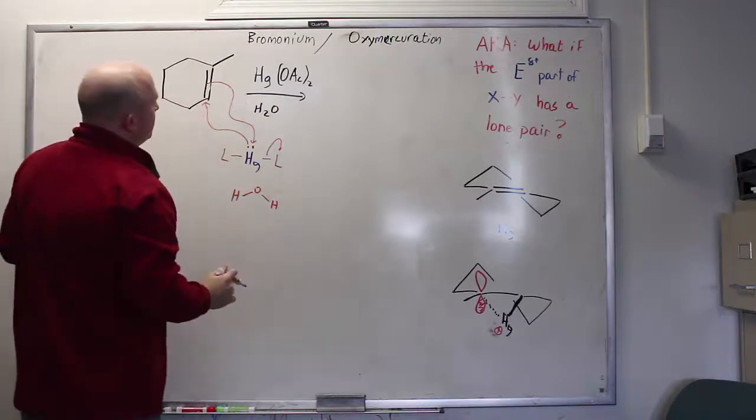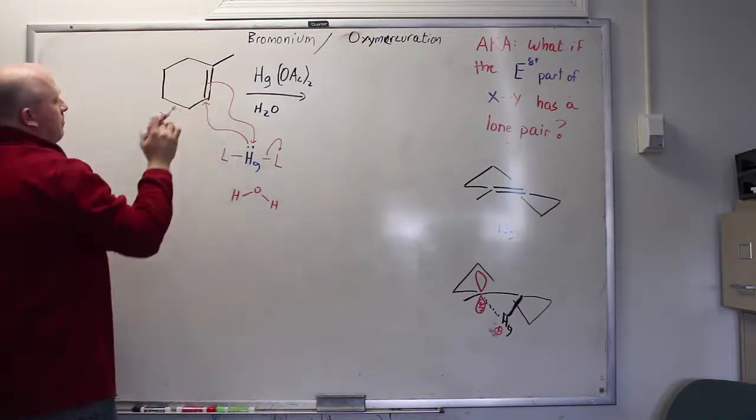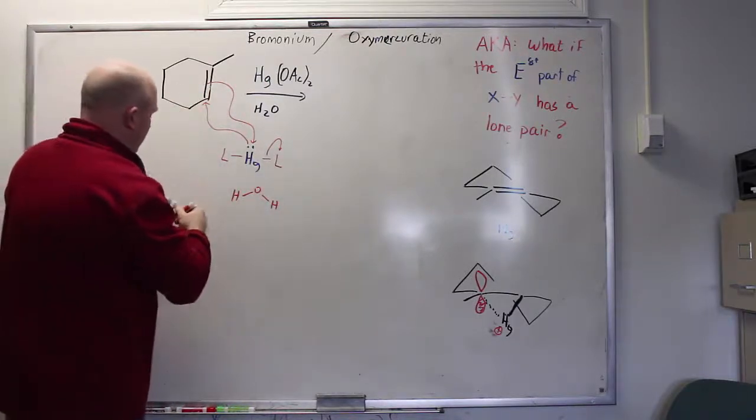The result is three arrows must be drawn: double bond to the mercury, ligand leaves, pair of electrons from the mercury back to the double bond, which leads to an intermediate.